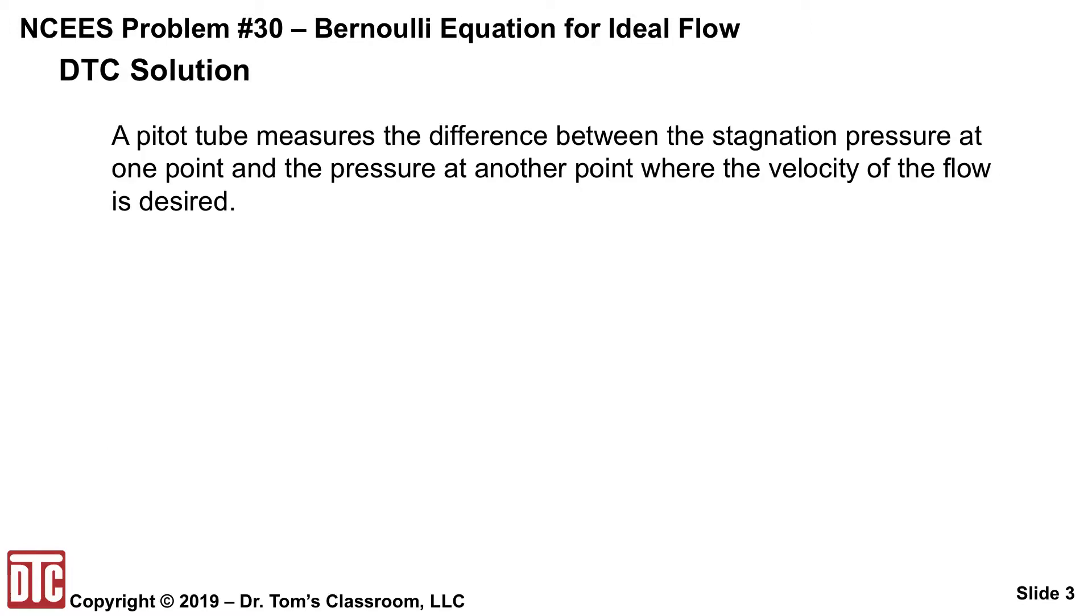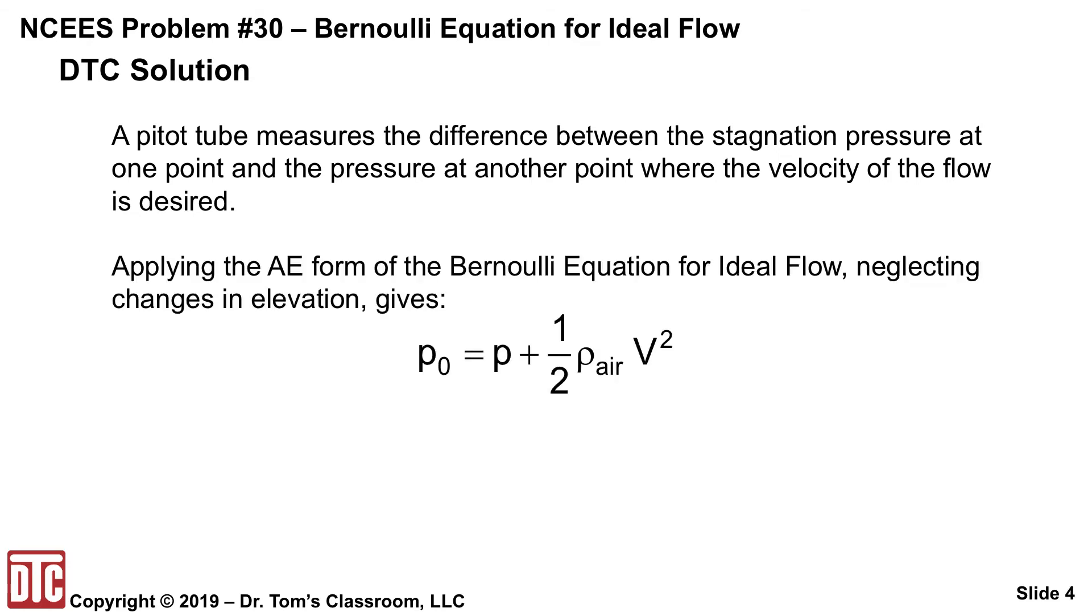A pitot tube measures the difference between the stagnation pressure at one point and the pressure at another point where the velocity of the flow is desired. This type of problem is very applicable for the AE form. If we apply that form here, there's typically not a change in elevation, so that term never usually appears here when you're using the AE form. If you've got a change in elevation, you're probably going to use the civil engineering form.